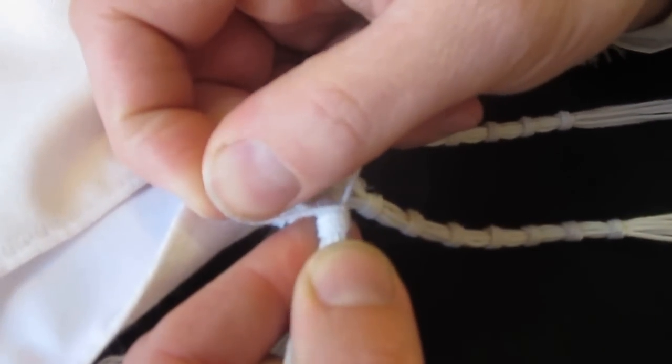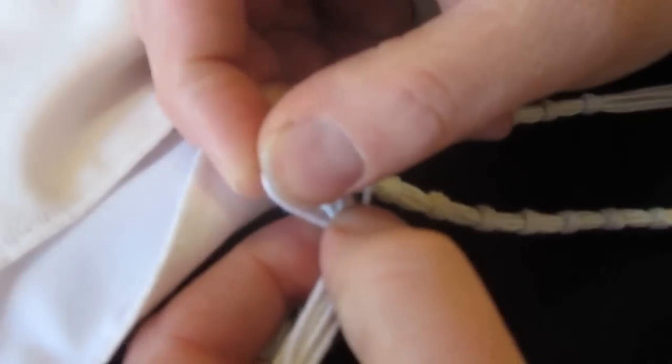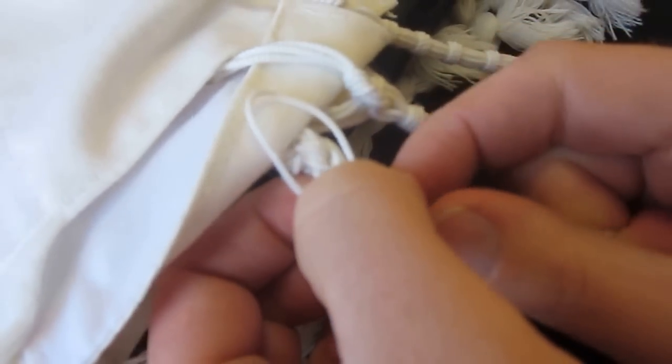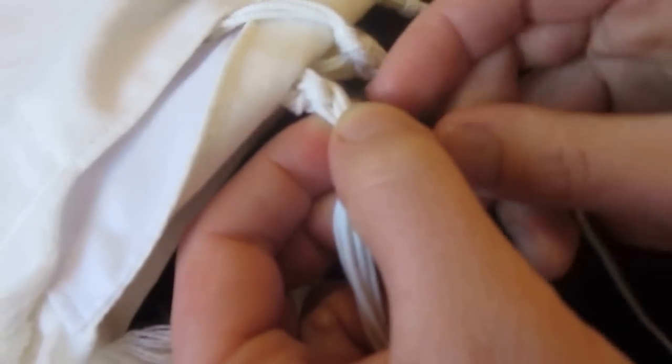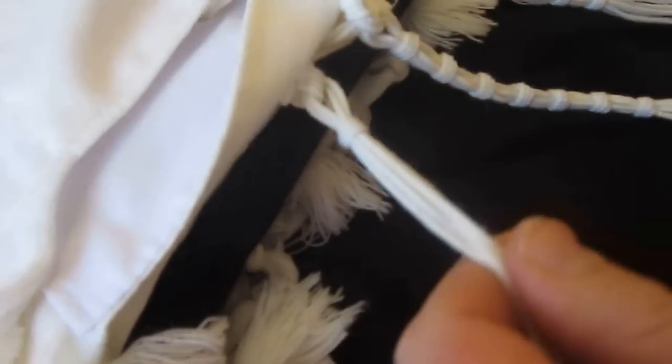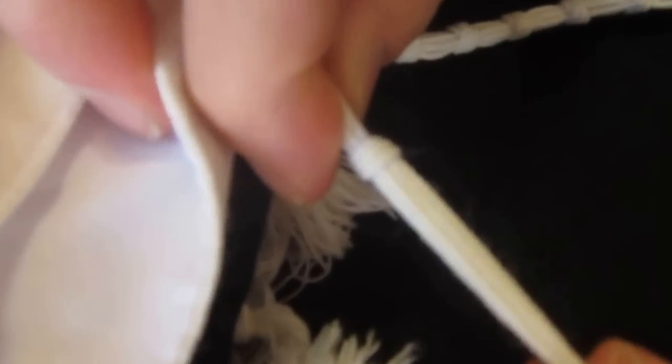and now you hold on with your thumb, you find your long string, and you start pulling slowly. Sometimes it gets a little bit stuck, you pull it through, and there we have a chulia.